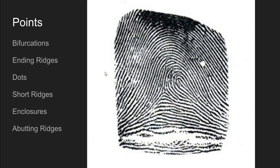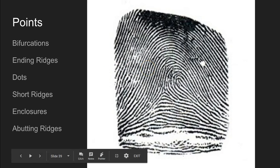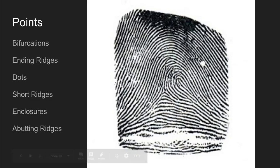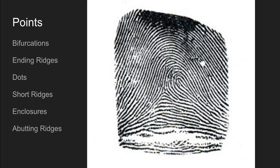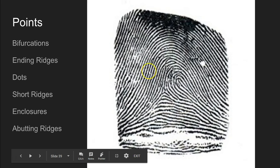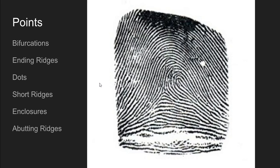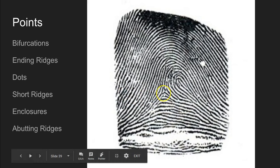Dots are exactly what they sound like — really tiny ridges that form small little dots; we can see several in this fingerprint. A short ridge is exactly what it sounds like — just a really short ridge, and here's an example of one. An enclosure is a ridge that bifurcates, splits into two, and then closes back off again — here we have a ridge traveling along that splits but then closes back off. An abutting ridge is two ridges that intersect at a sort of angle — a ridge that slams into or hits another ridge at an angle. All of these are examples of what we call points or individual characteristics.